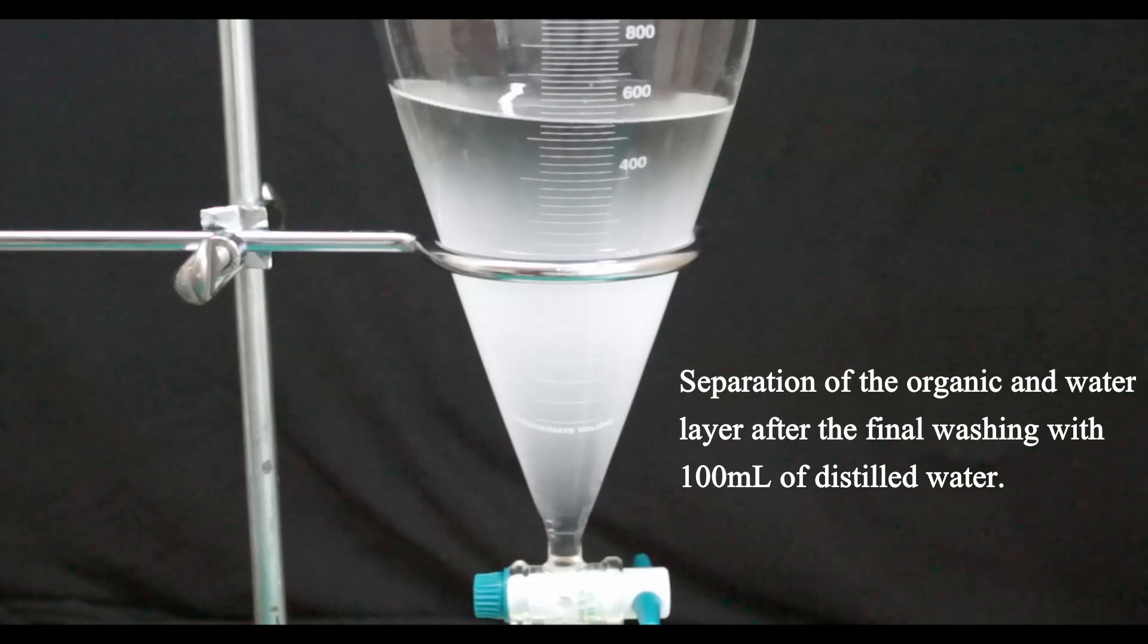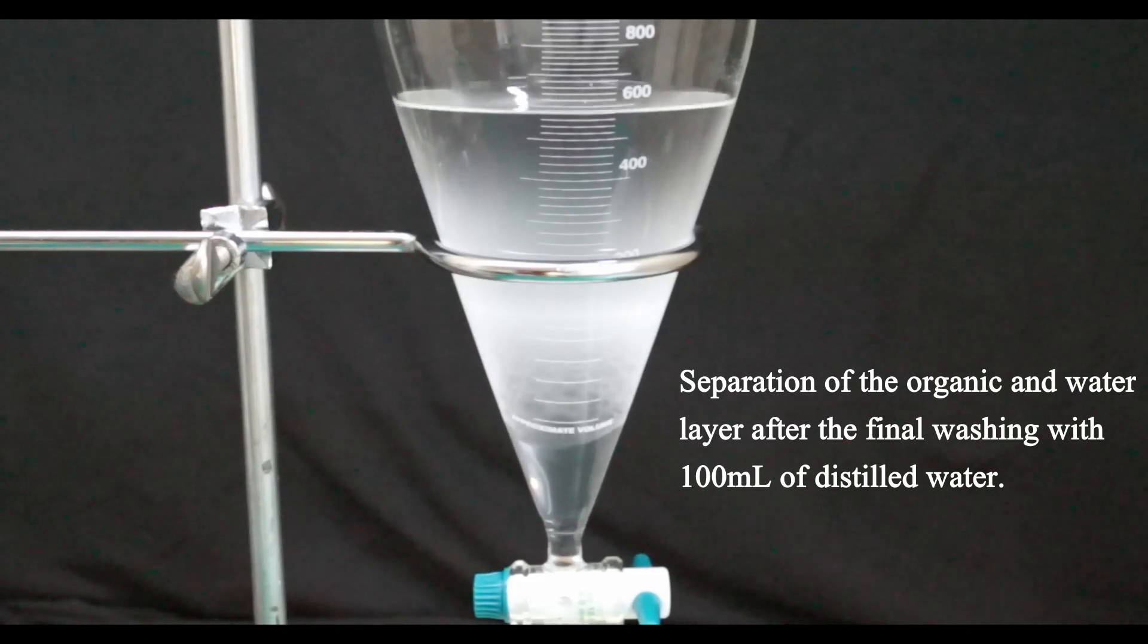The final washing is done with 100 milliliters of distilled water and as you can see in the video the phase separation after vigorous shaking is very fast. During all the washings there was no problems with emulsion formation and every time I got a quick phase separation as the one you see now.